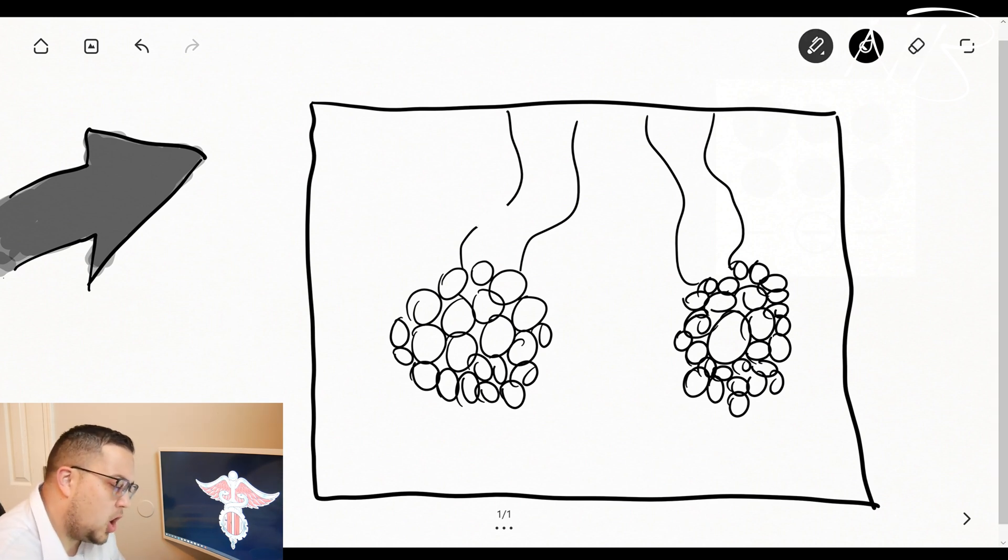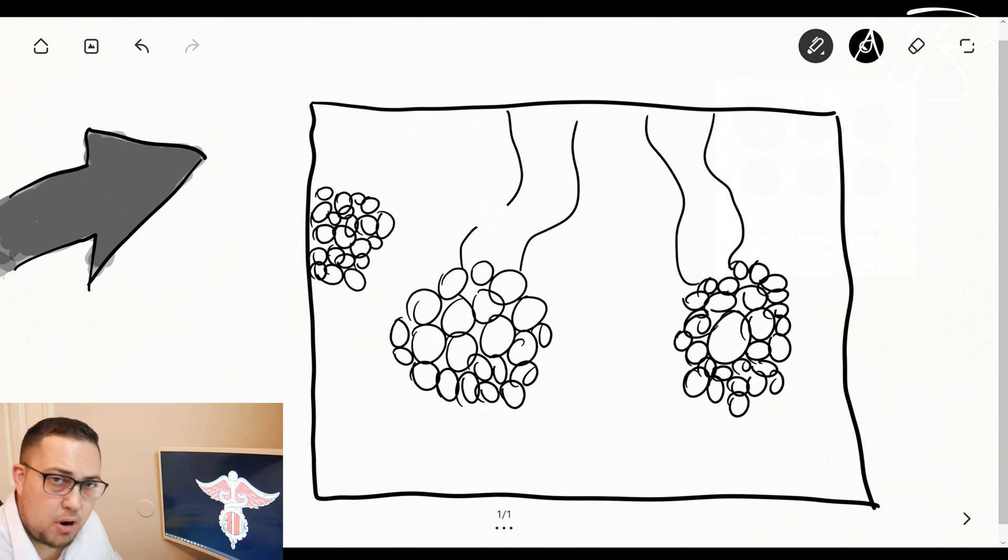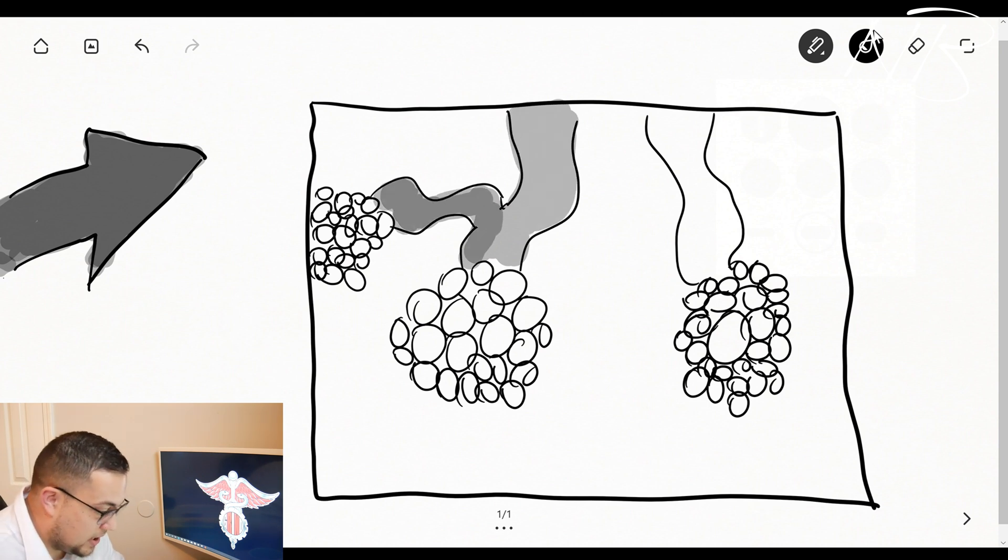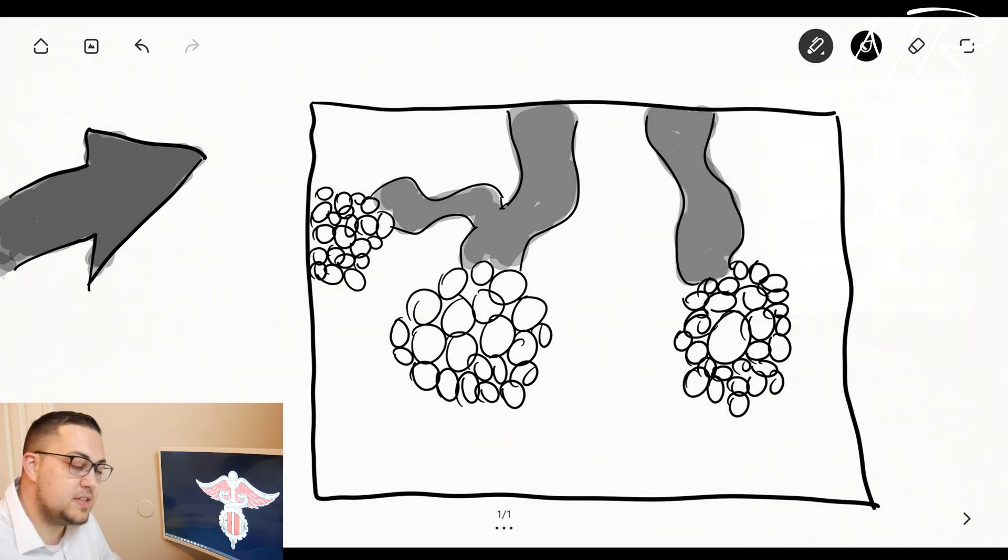What's stemming off of these alveolar sacs are actually those bronchioles. These bronchioles where oxygen's coming in, coming down through our trachea to our two main stem bronchi, down to our little bronchioles and feeding into these alveolar sacs where gas exchange occurs.